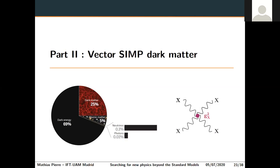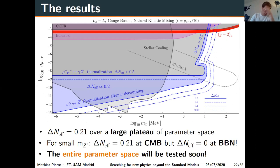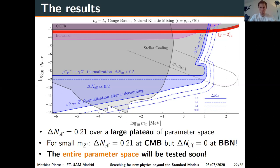Q&A: Regarding the model, the charges under Z' are fixed by L_μ − L_τ: charge +1 for the muon and −1 for the tau, which cancels anomalies. This is one of very few extensions of the SM that can be promoted to a local gauge symmetry without adding anything. Similar anomaly-free options include L_e − L_μ and L_e − L_τ.